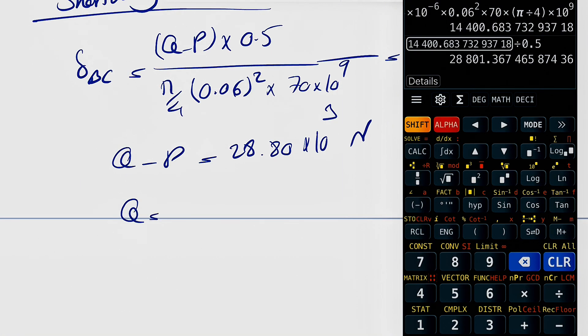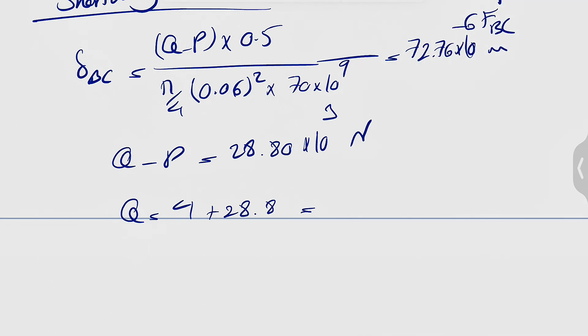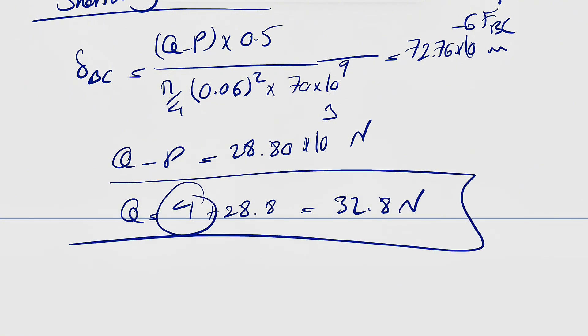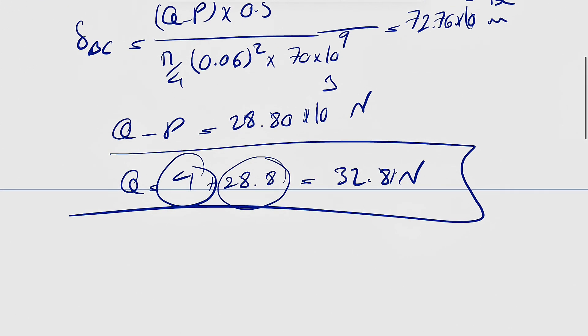This is going to give us 28.80 times 10 to the 3 newtons. So our Q would be basically P, which was 4 kilonewtons. We just have to add 4 plus 28.80, which is going to be 32.8 kilonewtons. That's what we have for Q. 32.8 kilonewtons. This is the part A answer of the question.